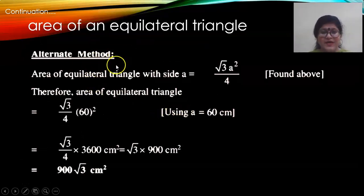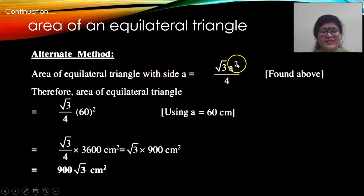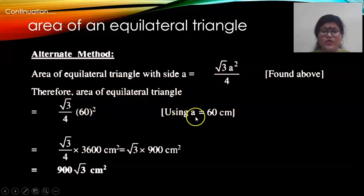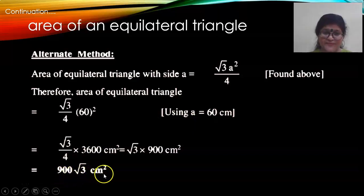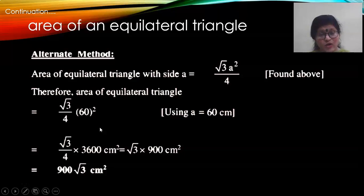Alternate method: now that we know the area formula for an equilateral triangle — root 3 upon 4 times side squared — we can find the area directly. Each side is 60 centimeters, so it is root 3 upon 4 into 60 squared, giving the area as 900 root 3 centimeter square. So we have found the area both by Heron's formula and by deriving the equilateral triangle formula from it.